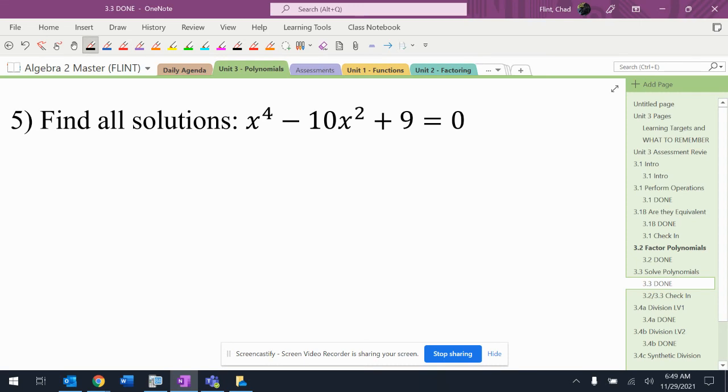So find all the solutions. All right, again, set equal to zero, find the zeros, find the solutions, find the roots - any of that stuff. I see an x to the fourth, so first of all I know I'm going to need four solutions. I'm going to think about that as I'm going through. I need to factor this.